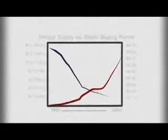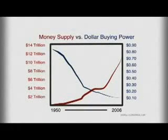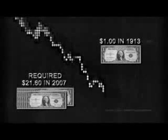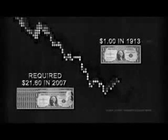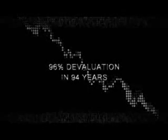In fact, a quick glance at the historical values of the U.S. dollar versus the money supply reflects this point definitively. For the inverse relationship is obvious. One dollar in 1913 required $21.60 in 2007 to match value. That is a 96% devaluation since the Federal Reserve came into existence.